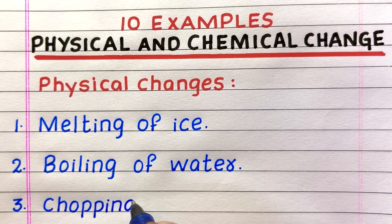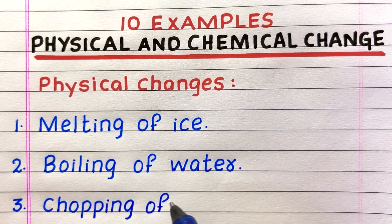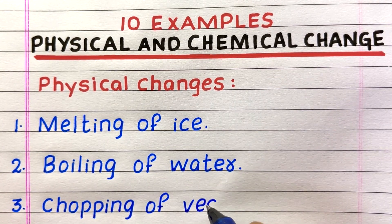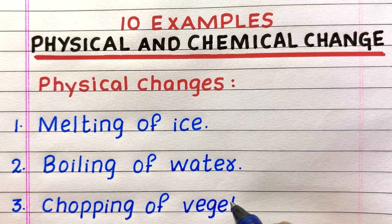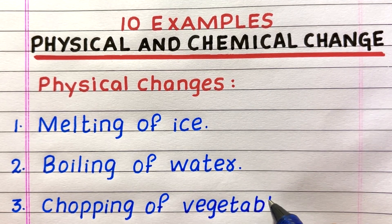First example of a physical change is melting of ice. Second, boiling of water. Third, chopping of vegetables.